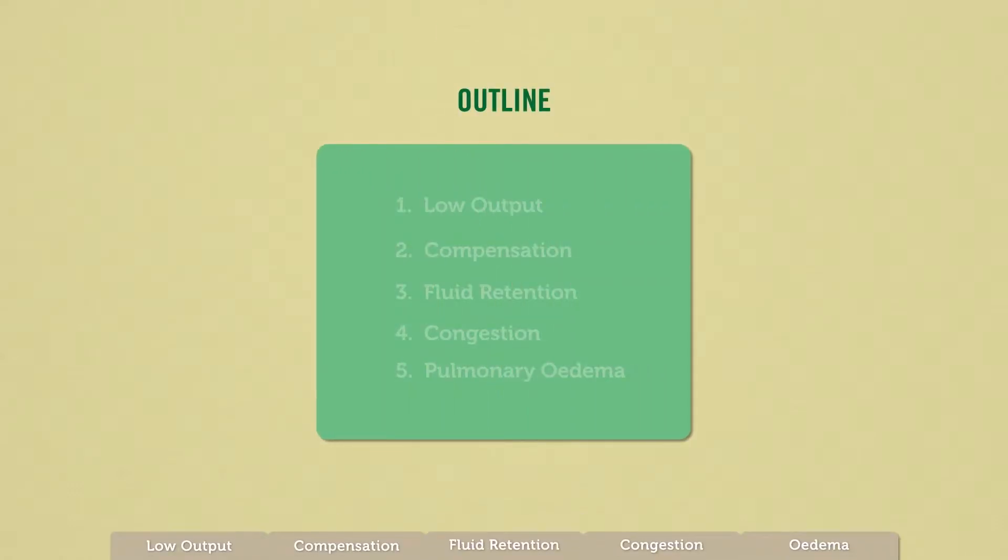The outline of this discussion of the pathophysiology of heart failure is: first, low cardiac output; second, compensation; third, fluid retention; fourth, congestion; and finally, how that leads to pulmonary edema.